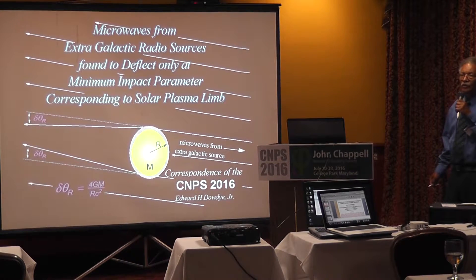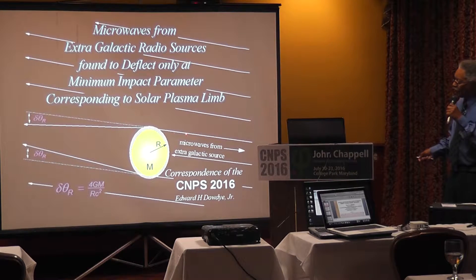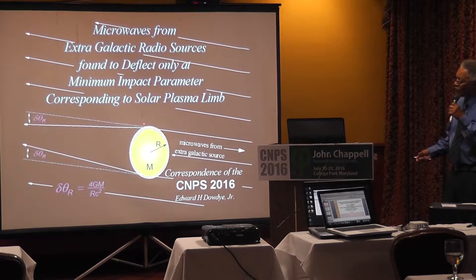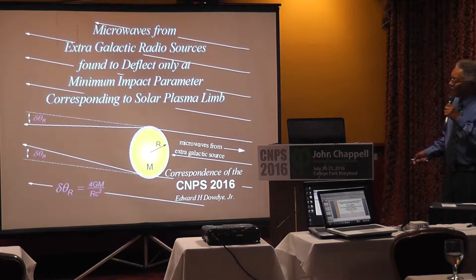When you look at this and study it, the only lensing they find is when these rays come in tangent and interfere with the solar plasma of the sun — and they are lensed or bent. This bending, you can derive using classical physics.